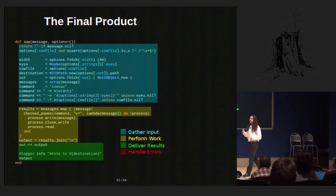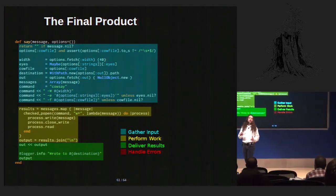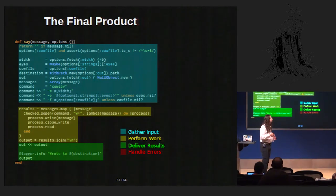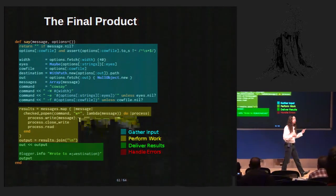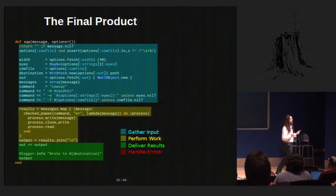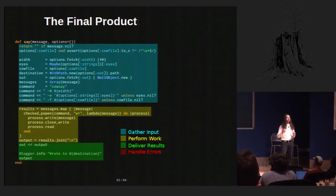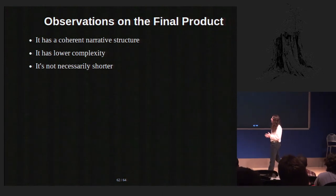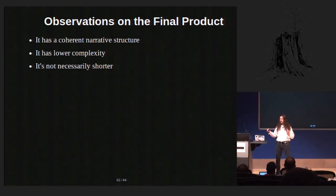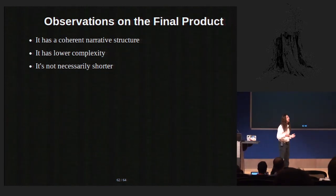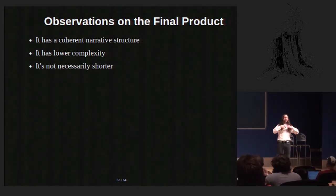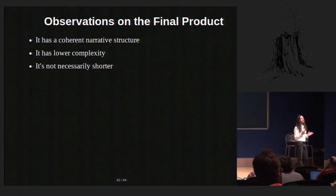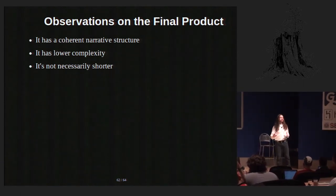When we apply all of these refactorings, we get a result that's now in that narrative order. It's got the gathering input, the doing work, and then code to take care of returning results — in that order. All of the error handling code has been extracted and isolated out into separate methods. It has that more coherent narrative structure. It has lower complexity — in the computer science sense of cyclomatic complexity. Fewer branches, fewer ifs and case statements, equals lower complexity.